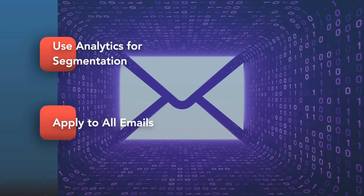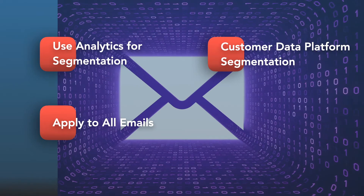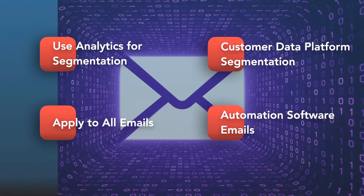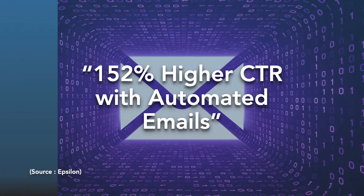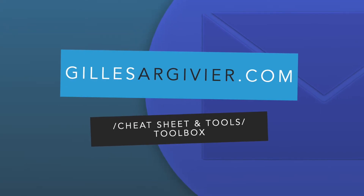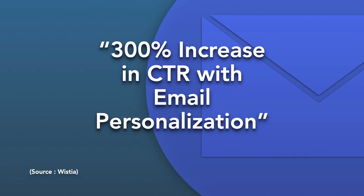To truly be efficient at this, I highly recommend you use both a Customer Data Platform, or CDP, for segmentation, and automation softwares for email, since automated emails have a CTR, or click-through rate, 152% higher than regular emails according to a research by Epsilon. When personalizing your emails, consider leveraging both simple and advanced personalization techniques, using multiple fields that get updated in your message like the first name of your user, his industry, or center of interest, or even replacing your text messages with welcoming videos. According to a survey by Wistia, including personalization in your email flow can potentially increase your CTR by 300%.